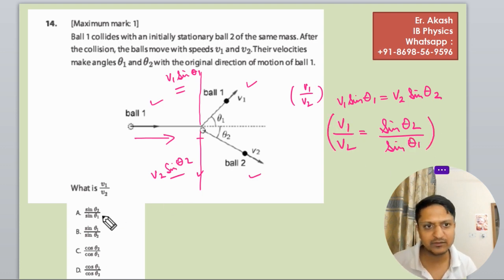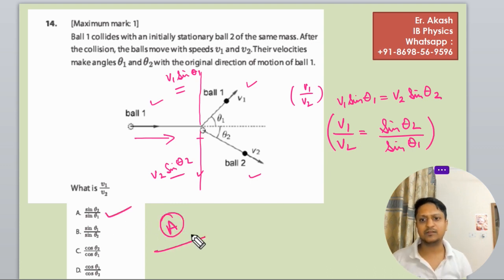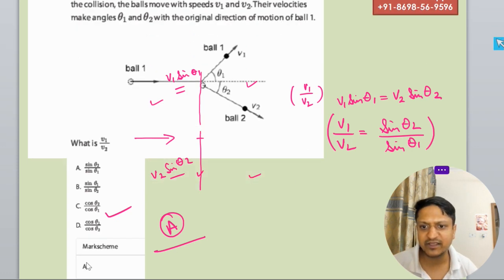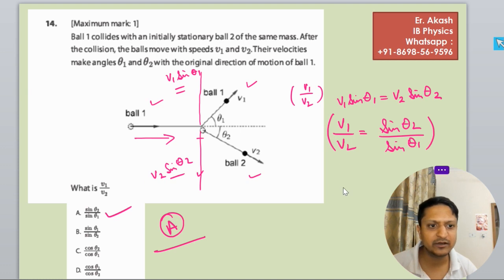So among all these options, this option A is the right option. So we will check the mark scheme. Mark scheme says A, so we are in the right direction.